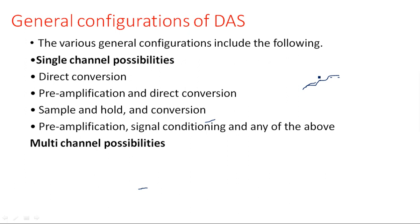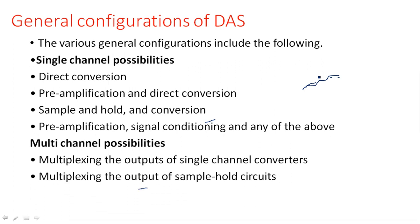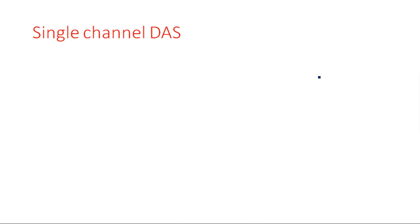Pre-amplification, signal conditioning, and any of the above are also single channel possibilities. Coming to the multi-channel possibilities: multiplexing the output of single channel converters; multiplexing the output of sample and hold circuits; multiplexing the inputs of sample and hold circuits; and multiplexing low-level data.